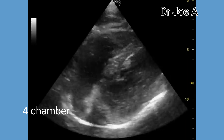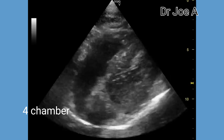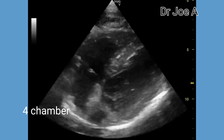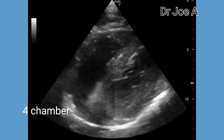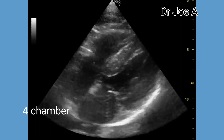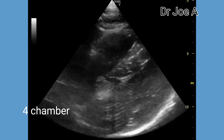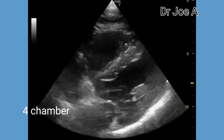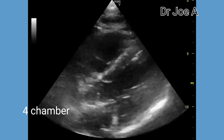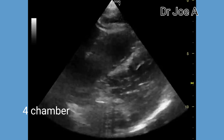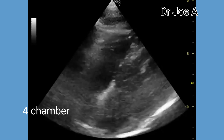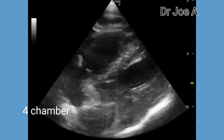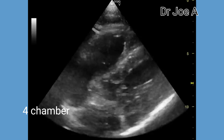This four chamber view shows the prominence of the interventricular septum, as seen in the previous views also. Untreated LVH can result in hypoxia of the left ventricle.